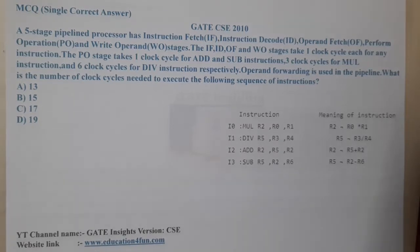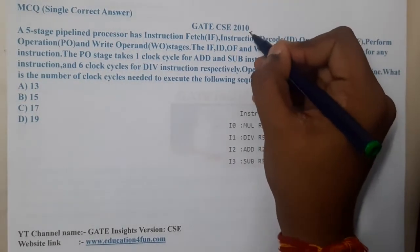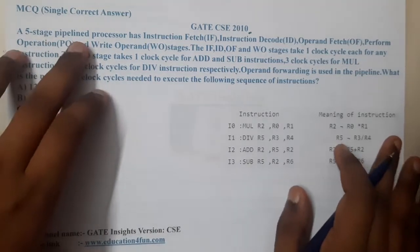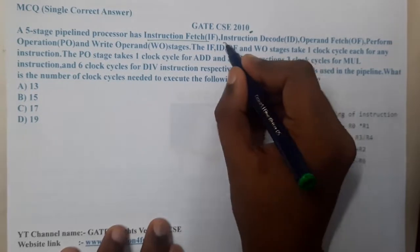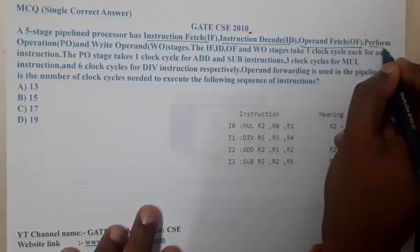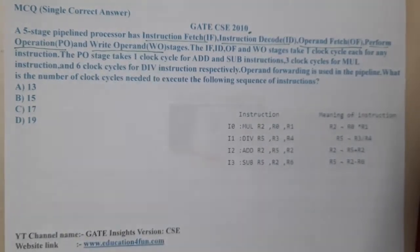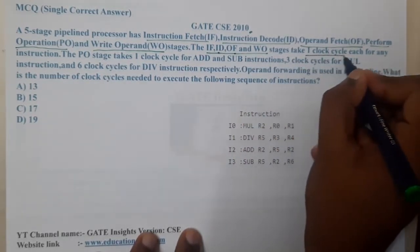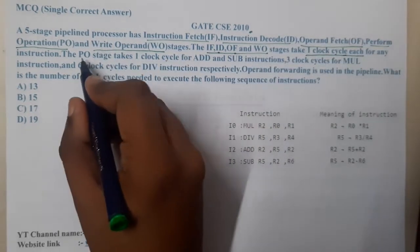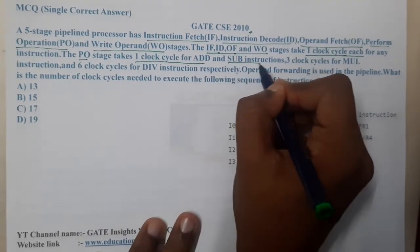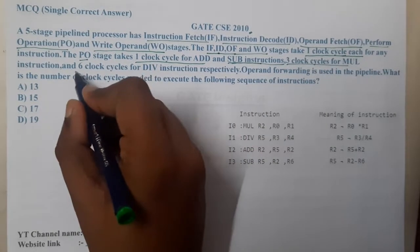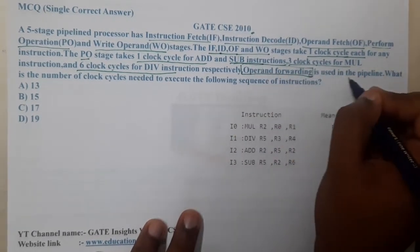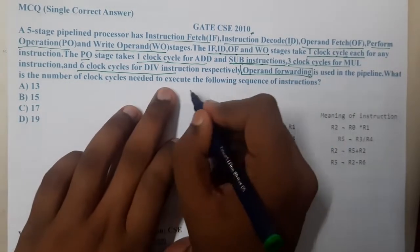Welcome back. This question is from GATE CSC 2010. It involves a five-stage pipeline processor with stages: Instruction Fetch (IF), Instruction Decode (ID), Operand Fetch (OF), Perform Operation (PO), and Write Operation (WO). IF, ID, OF, and WO each take one clock. PO takes one clock for addition and subtraction, three clocks for multiplication, six clocks for division. Operand forwarding is used in the pipeline.